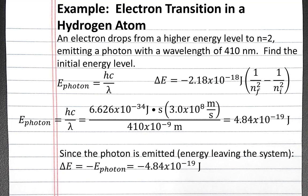Conceptually, we know that a photon is emitted when an electron drops from a higher energy level to a lower energy level. And when energy leaves the system in the form of the photon, our change in energy should be negative.